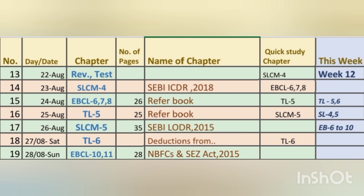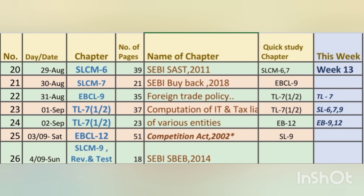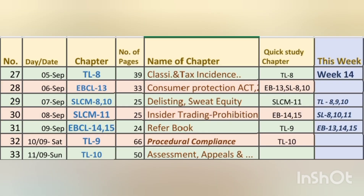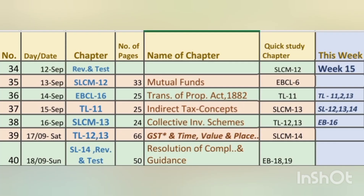In the 12th week we'll be studying Tax Laws two chapters, SLCM two chapters, and EBCL five chapters. For the 13th week: Tax Laws one chapter, EBCL two chapters, and SLCM three chapters. For the 14th week we'll be studying nine chapters total — three chapters each in Tax Laws, EBCL, and SLCM — six chapters at the end of the week. Tax Laws chapters 9 and 10 — procedural compliance and assessment, appeals and revisions — are shifted to Saturday and Sunday, with the revision session on Monday.